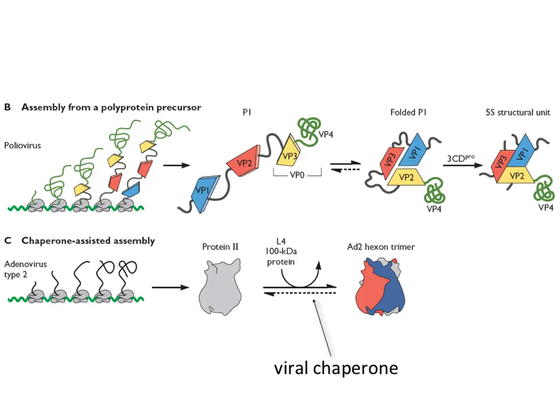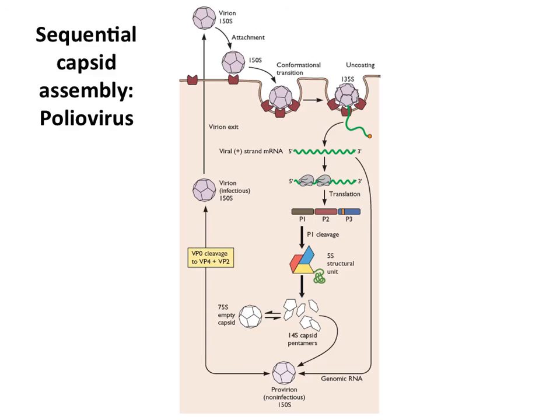In some cases we need chaperones — the virus uses cellular proteins, and one of them is chaperones that help maintain proper folding of viral proteins. These can be cellular or viral chaperones. Here we show an example of a viral chaperone: the hexon protein is made by translation of the appropriate mRNA, and then a viral chaperone — the L4 100-kilodalton protein — associates to form the hexon trimer that gets put into the virion.